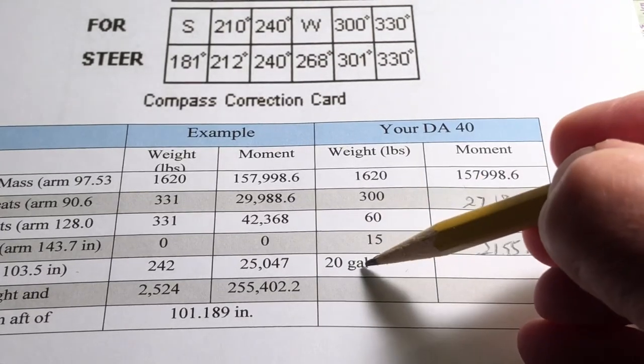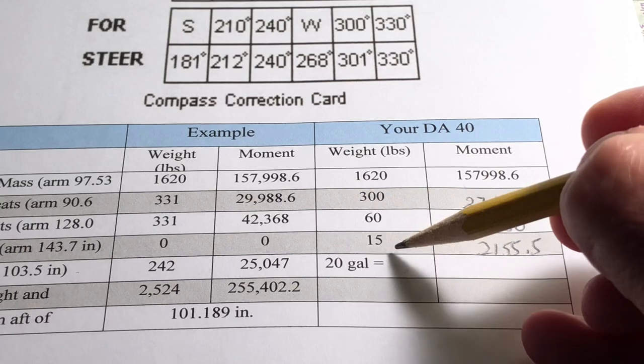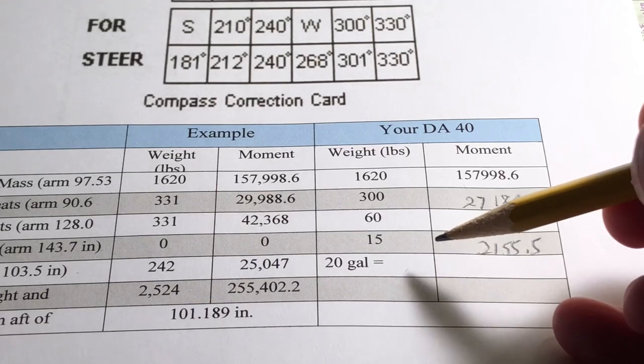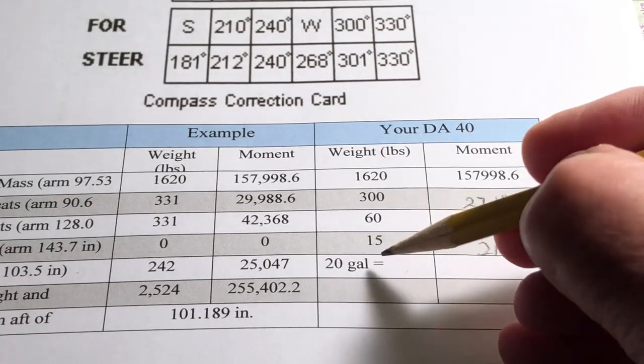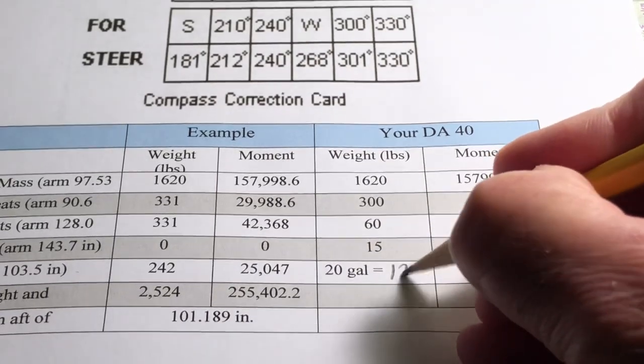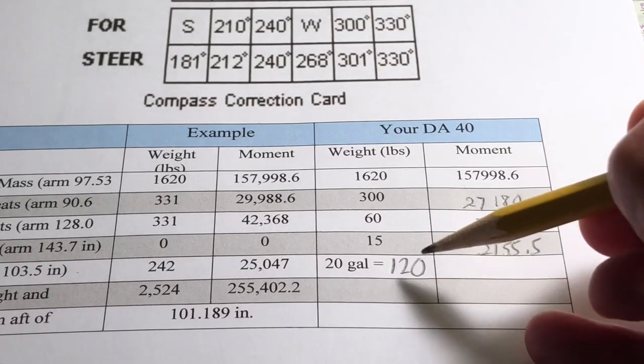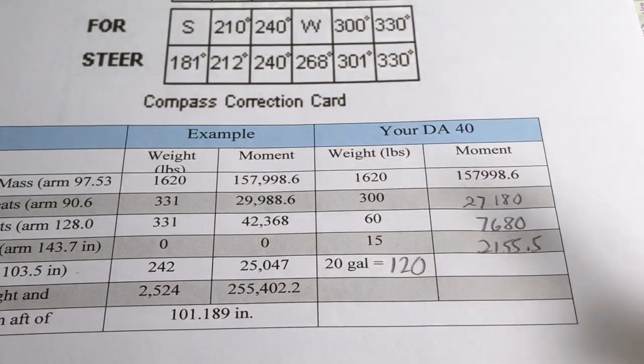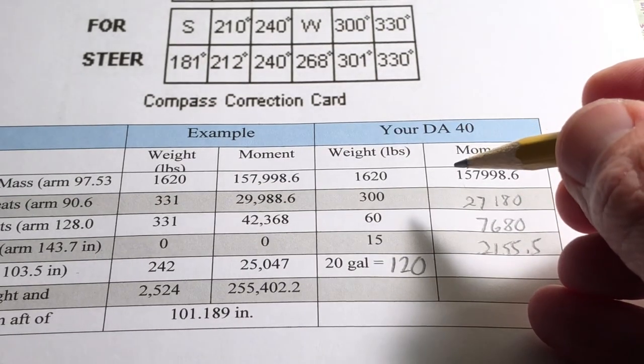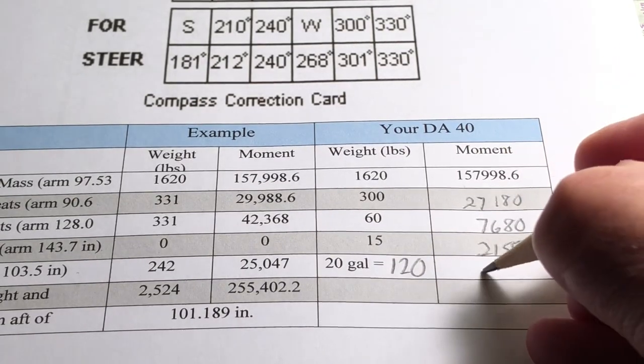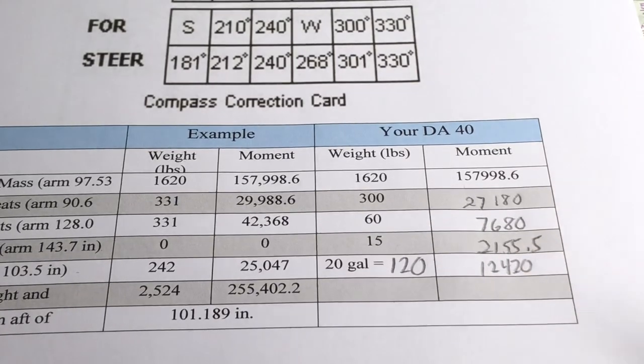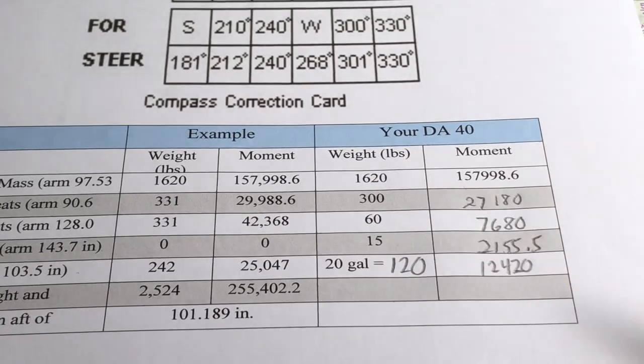Now we have gallons of gas. Remember we have to convert that to weight. Each gallon of aviation fuel weighs 6 pounds, so 20 times 6 is 120 pounds. We multiply 120 pounds by the arm of 103.5 to get 12,420. That's the moment for the fuel.